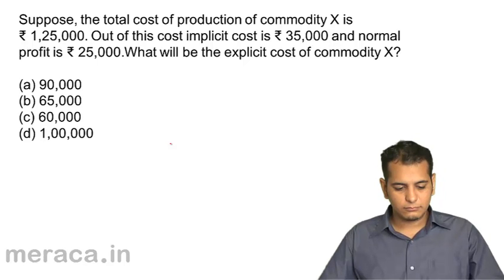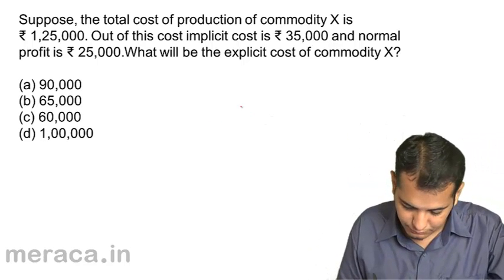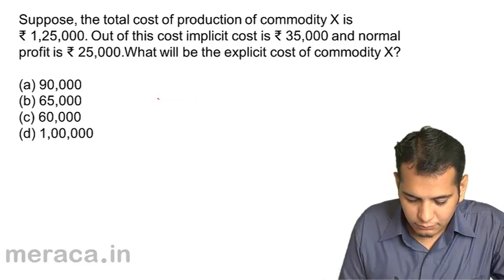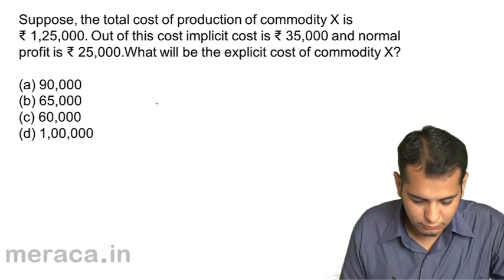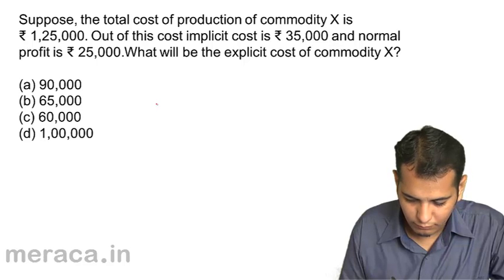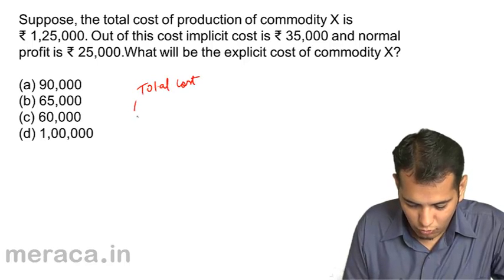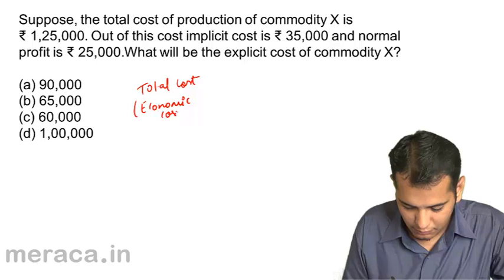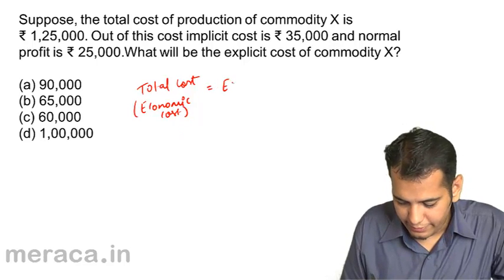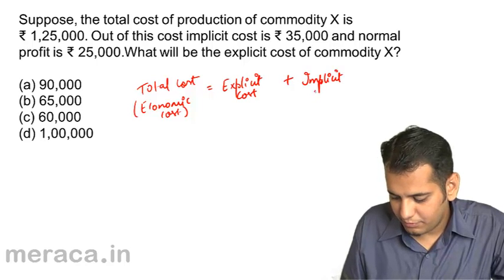Let's see what's the answer. Total cost or economic cost equals explicit cost plus implicit cost.